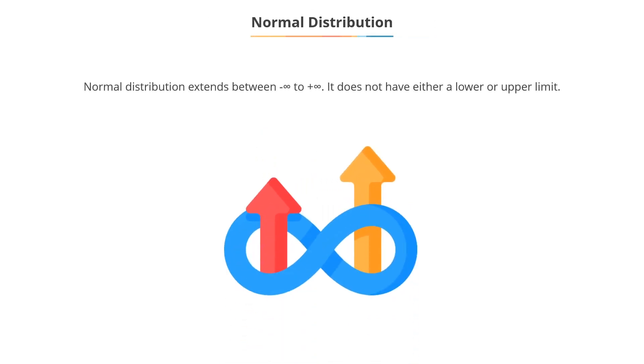Let's understand normal distribution. Normal distribution extends between minus infinity to plus infinity. In other words, the distribution does not have either a lower or upper limit. The distribution is completely specified by its mu and sigma.